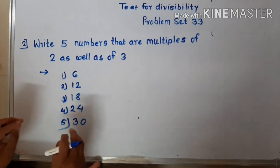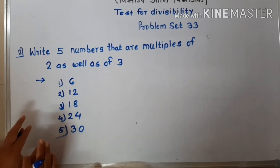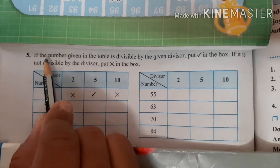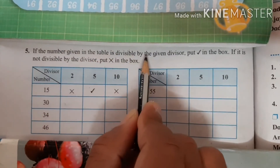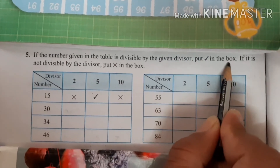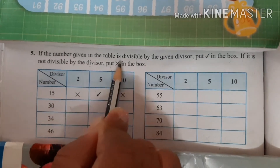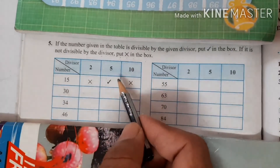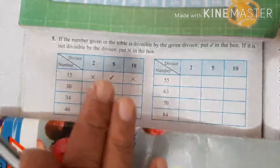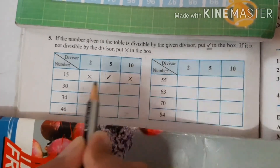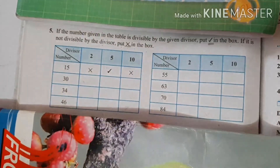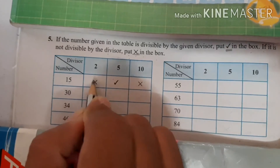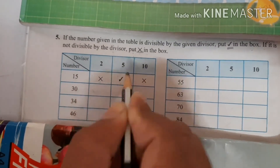Students, see the example very carefully and follow the next example. The next question: if the number given in the table is divisible by the given divisor, put the tick sign in the box; if it is not divisible by the divisor, put the cross sign in the box.